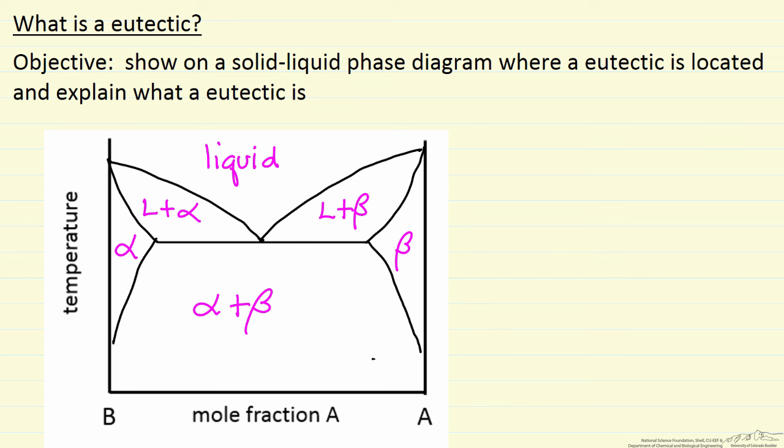First we need to understand this diagram, so showing an alpha phase here, what that corresponds to is a solid that is mostly component B with some A dissolved in B, so A has limited solubility in B.